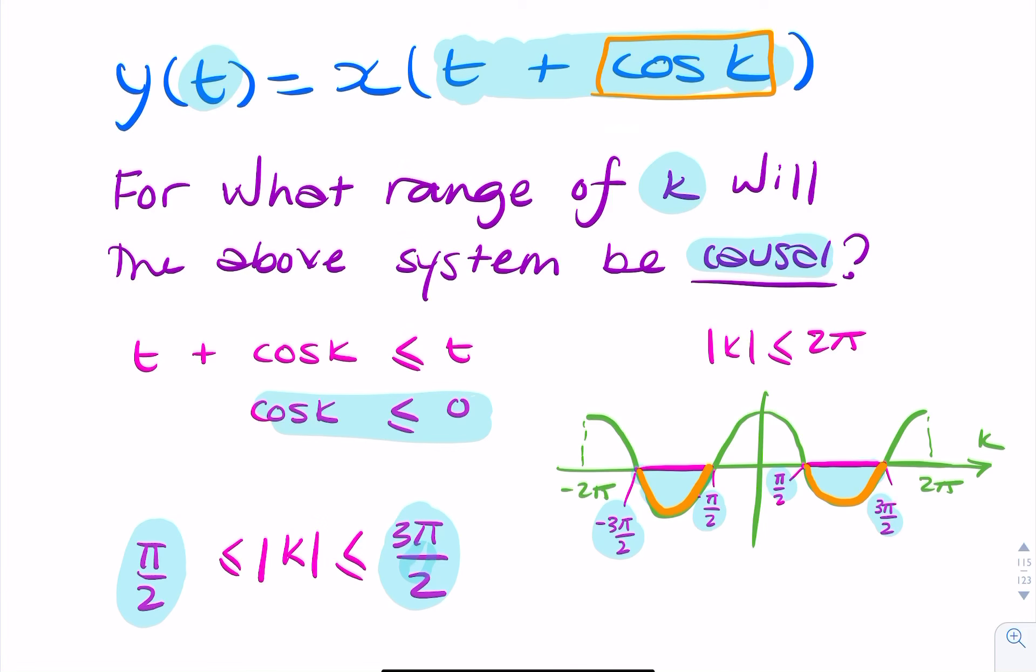So for causality, k has to be within that range. So I've just found the range of values for k for which this system is causal.